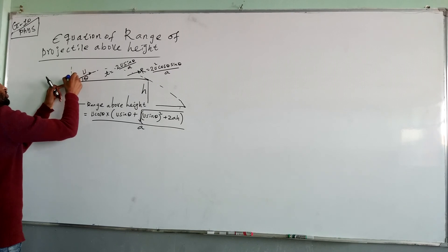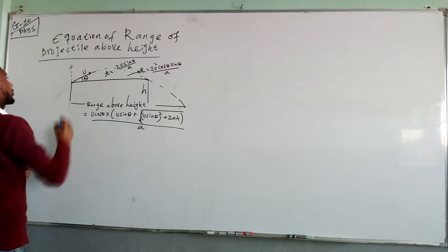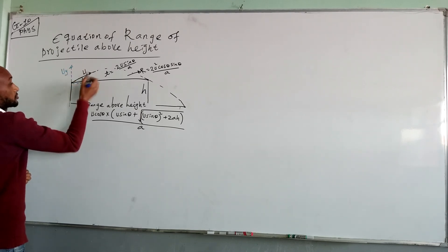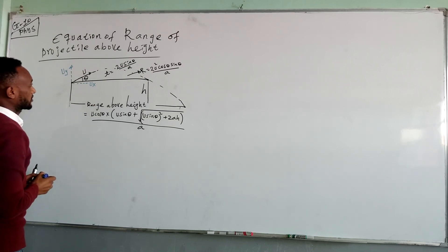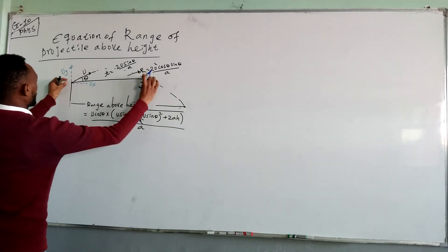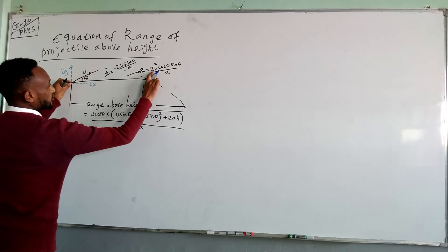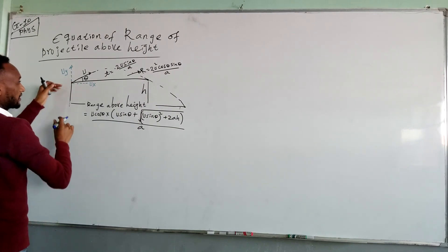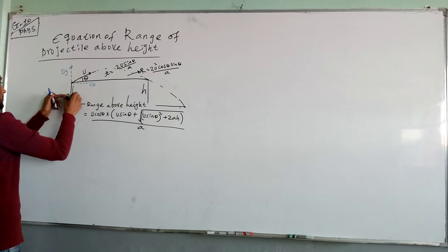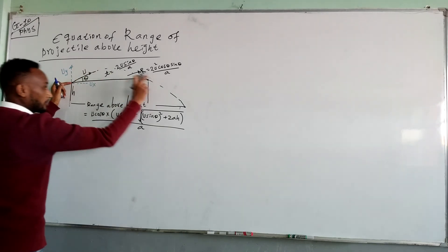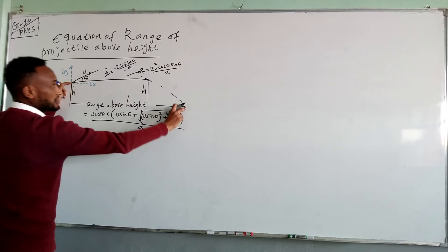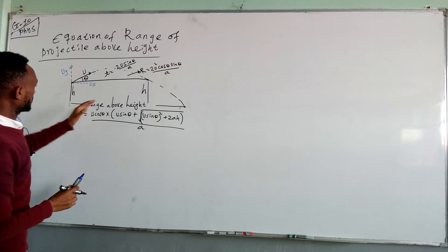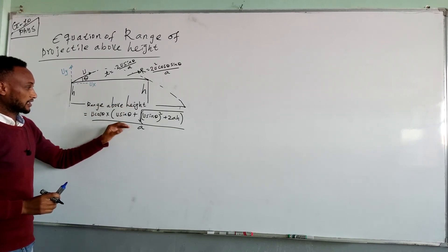Initially the body is projected at angle theta. Here we resolve the velocity into its components. The vertical component is u_y and the horizontal component is u_x. For this projectile motion only, we have a range equal to 2u² cos θ sin θ over acceleration. Now the projectile occurs above some height h, and finally lands at a lower point. To define the range above some height h, we use the following equation.